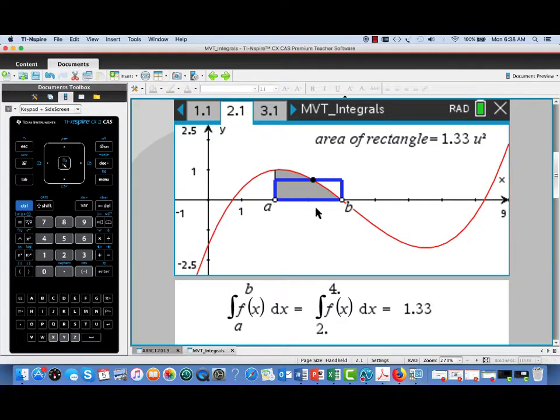Now this rectangle, shown in blue, sits on top of the interval from a to b. That means its width is the length of the interval b minus a. Its height has to be the average value. And we can see that the graph crosses at a point, and that's the point c that satisfies the mean value theorem for integrals.